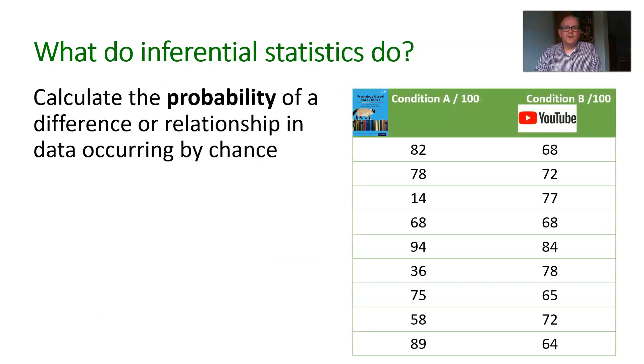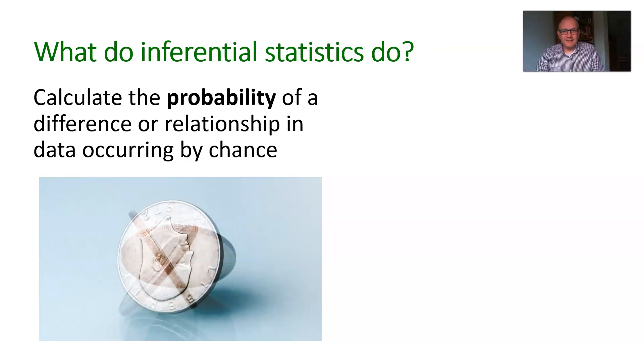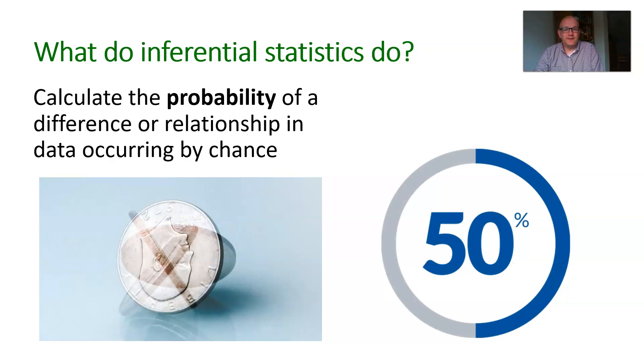So where do inferential statistics come into all of this? Well, what they do is they calculate the probability that my results occurred by chance. So this then establishes whether I can say it's a chance finding or a significant finding. So I'm sure you did this in your GCSE maths classes, where you looked at probabilities. Sorry about that. Everything's psychology to me. So if I got a coin and I flip my coin, what's the probability that I will get heads? Well, it's 50%, isn't it? There's two sides to that coin. It's likely to be 50% chance that I will get heads.